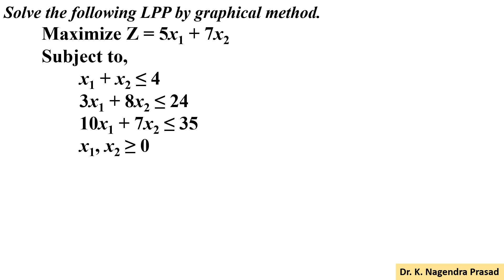Maximize Z equal to 5x1 plus 7x2, subject to: x1 plus x2 less than or equal to 4, 3x1 plus 8x2 less than or equal to 24, 10x1 plus 7x2 less than or equal to 35, and x1, x2 greater than or equal to 0.